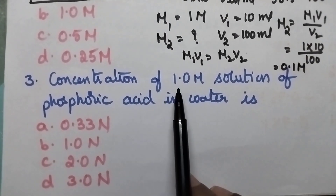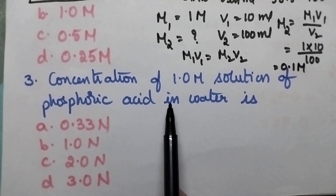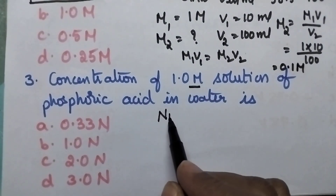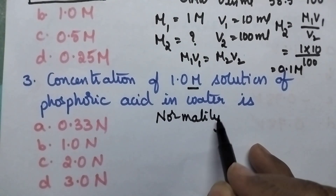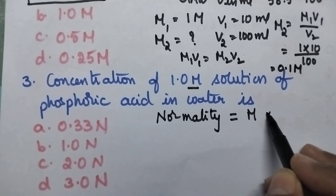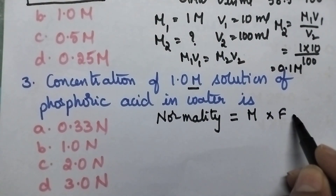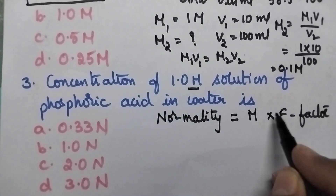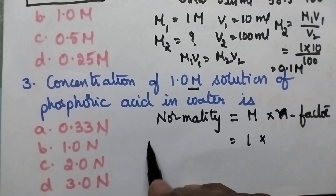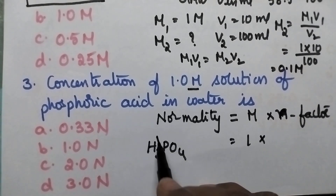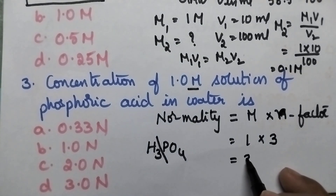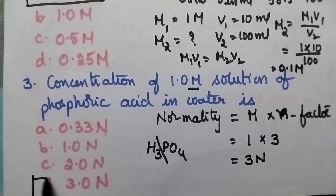The concentration of a 1 molar solution of phosphoric acid in water can be expressed in terms of normality. The relation is: normality = molarity × N-factor. Here molarity is 1 and phosphoric acid (H3PO4) has 3 ionizable protons, so N-factor is 3. Therefore normality = 3, and option D is the right answer.